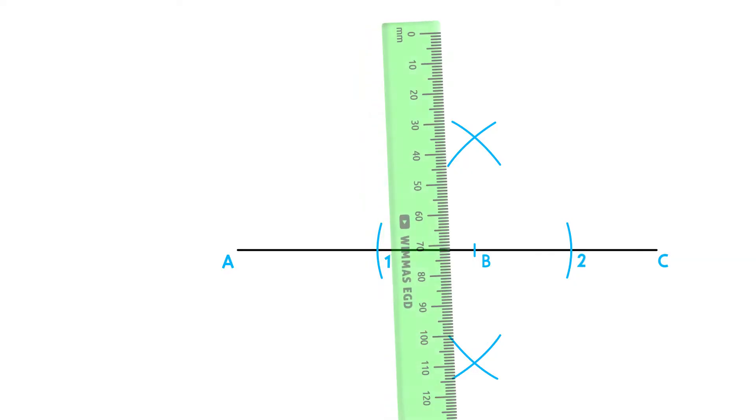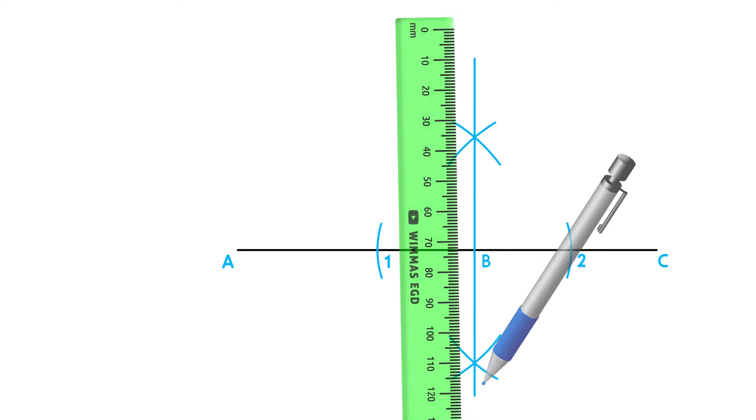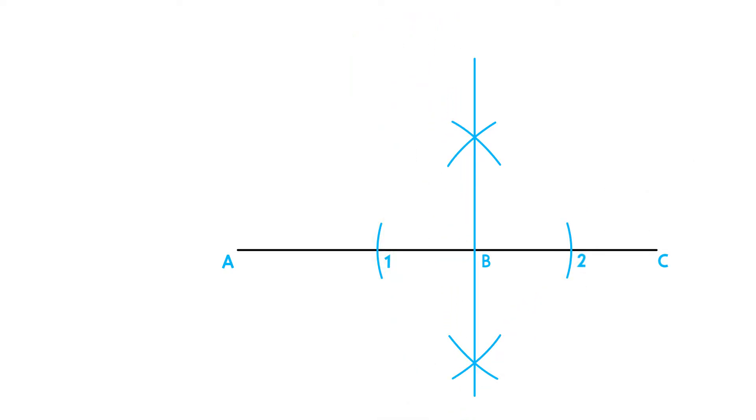Place your ruler on the two intersections and draw your perpendicular bisector. Then draw your perpendicular line on point B according to the specifications.